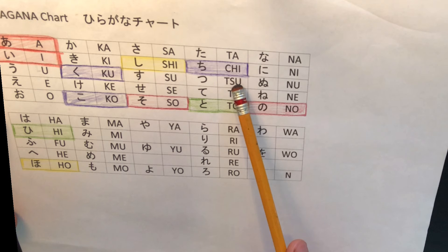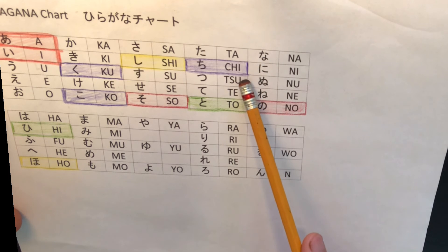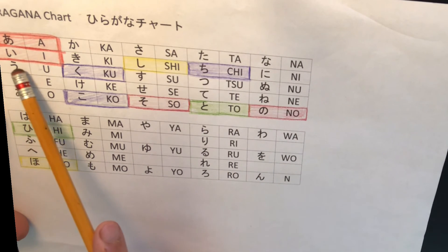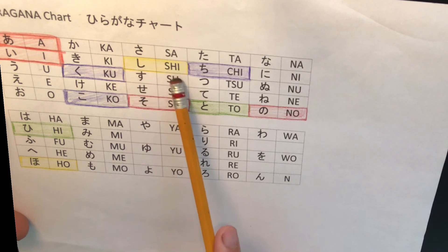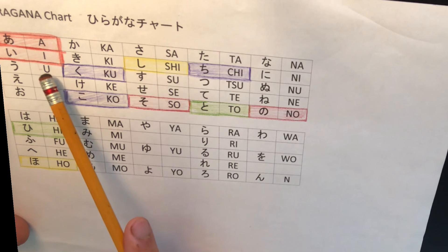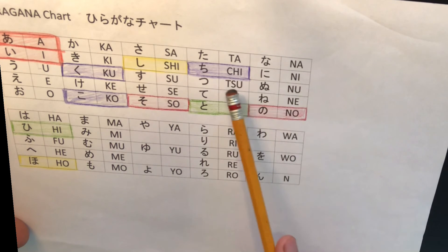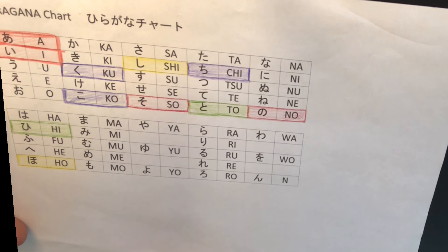The next hiragana is chi. Chi is the fourth vertical line. Ta chi tsu te to. And chi is on the same horizontal line as i. A i ki shi chi ni. In this line, the ending pronunciation is i. The letter i. A i ki shi chi ni. So, chi. Ko i ku chi. That means strong taste.